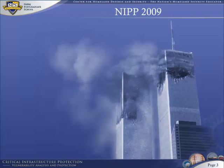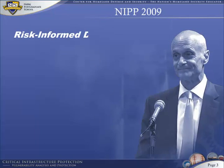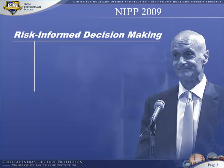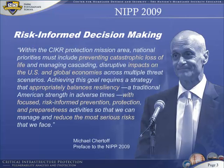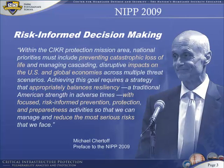Following the terrorist attacks of 9-11, former Secretary of Homeland Security Michael Chertoff defined a risk-informed decision-making strategy as a method of reducing the most serious risk facing America. He said: within the critical infrastructure key resources protection mission area, national priorities must include preventing catastrophic loss of life and managing cascading disruptive impacts on the U.S. and global economies across multiple threat scenarios.